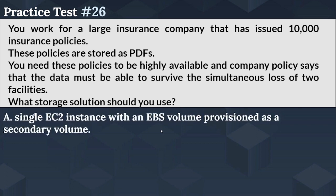Option A: Single EC2 instance with an EBS volume provisioned as a secondary volume. Option B: S3. Option C: Glacier. Option D: Route 53.